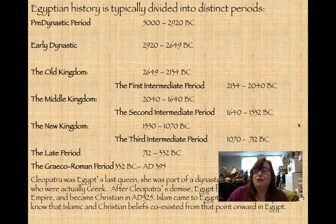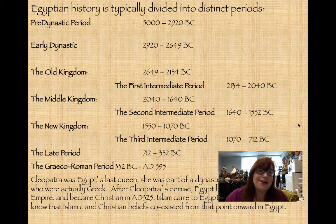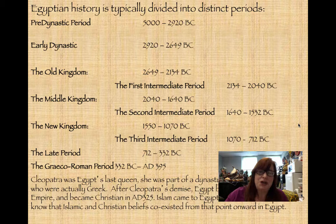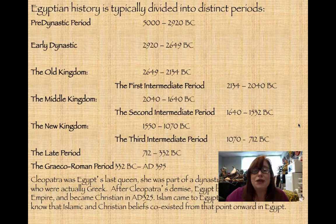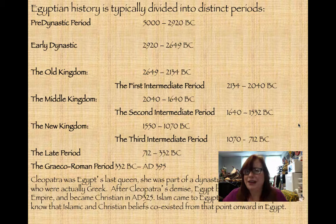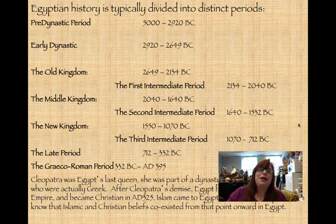In the Old Kingdom — 2649 to 2134 BC — the Great Pyramids were built. Then we have periods of disruption. There are three distinct intermediate periods in Egyptian history when Egypt was either disunified, experiencing civil war, or ruled by invaders. The first intermediate period was 2134 to 2040 BC, followed by the Middle Kingdom from 2040 to 1640 BC, then another disruption from 1640 to 1532 BC, and then the New Kingdom from 1550 to 1070 BC. A lot of Egyptian histories end there, which is a shame because there's so much more.